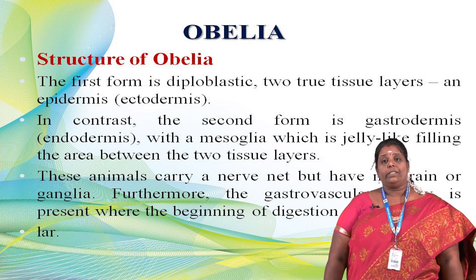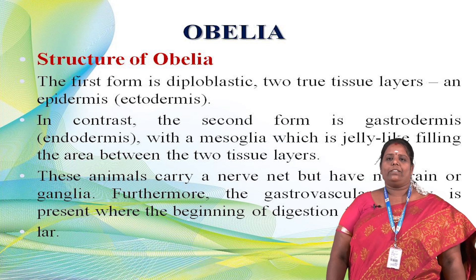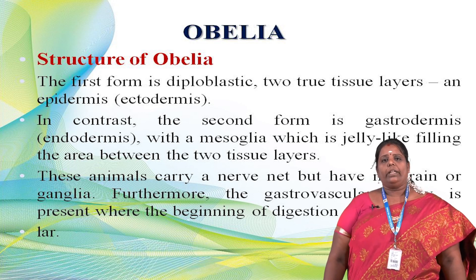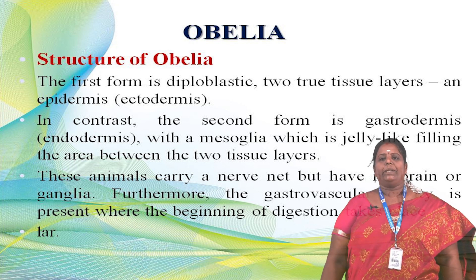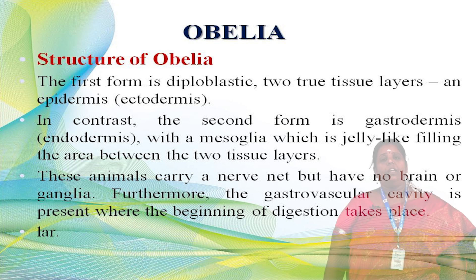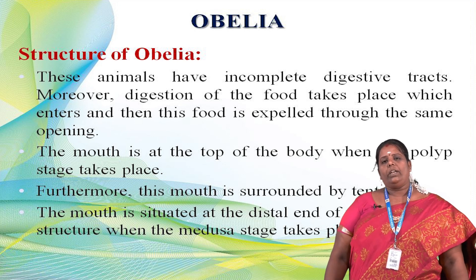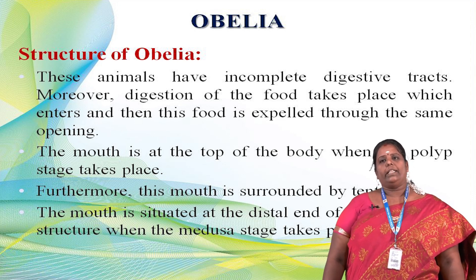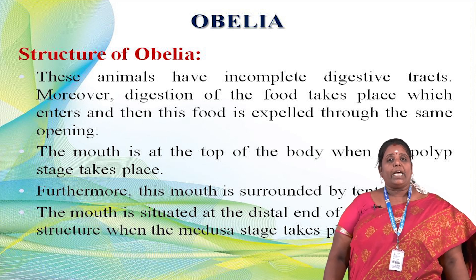The jelly-like mesoglea fills between the ectoderm and endoderm. These animals have nerves but no brain and no ganglia — the ganglia acts as a brain. The gastrovascular cavity is present, where digestion takes place, but the digestive system is incomplete. It is not a fully developed digestive system — food material is absorbed through the polyp and some material is expelled. So Obelia does not have a complete, fully developed digestive system.